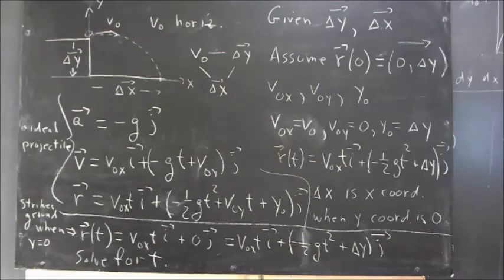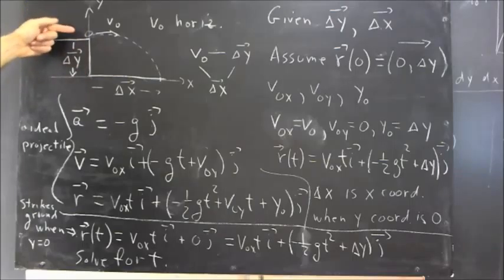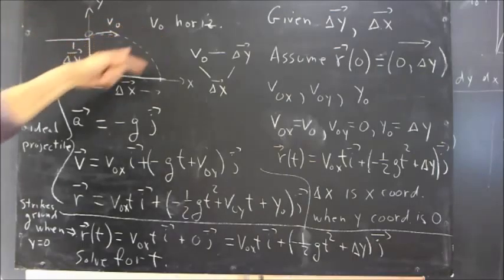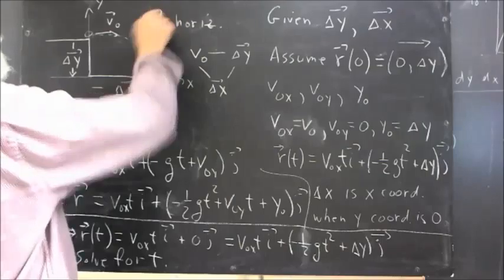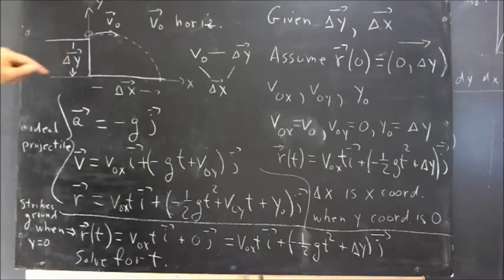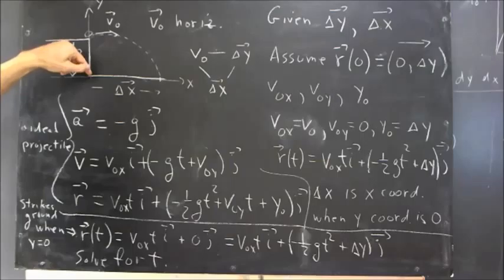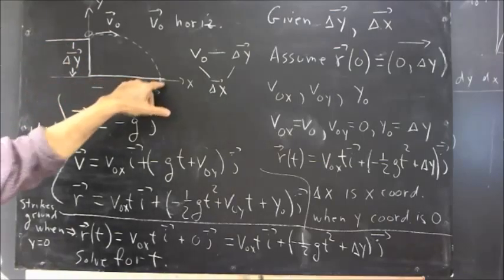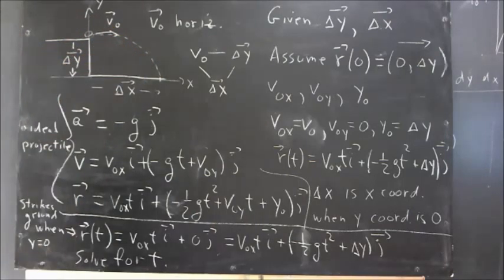Beginning our review of class, consider a situation where the projectile leaves some platform or cliff with an initial velocity v-naught, with v-naught being horizontal, meaning there's no y component to the initial velocity. Let delta y be the vector from here down to here, and let delta x be the vector from here to here, where this point is the point at which the projectile is going to land.